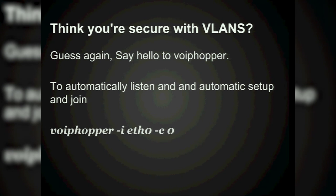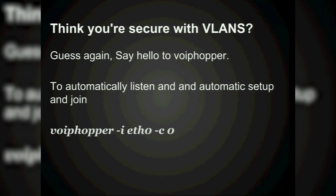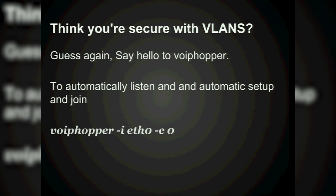Think you're secure with VLANs? Guess again. Say hello to VoIP Hopper — to automatically listen, set up, and join the voice VLAN. This is fantastic if you're staying at a hotel — they usually have Polycom or Cisco IP phones on a separate VLAN and you can hop onto it just like that.